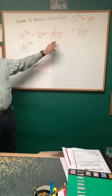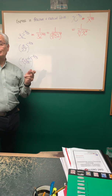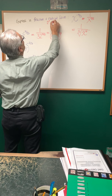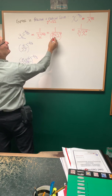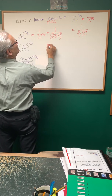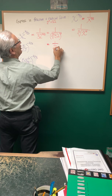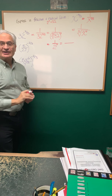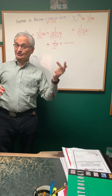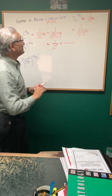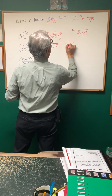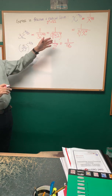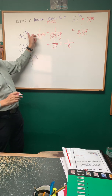Now the fifth root of 32, you may know, is two, because two to the fifth power is equal to 32. Therefore, the fifth root of 32 is equal to 2. So it's one over two to the fourth power. Two to the fourth power — two times two times two times two — that's 16. The answer is one over 16. So there we are, we've followed all three instructions for this exponent.